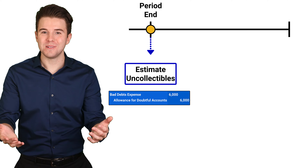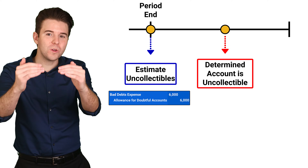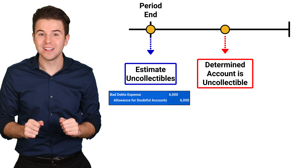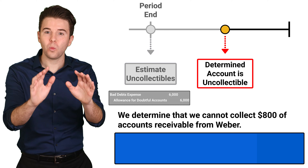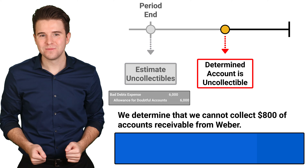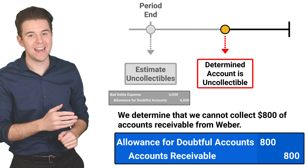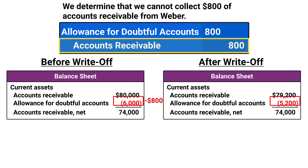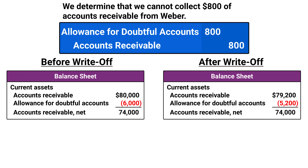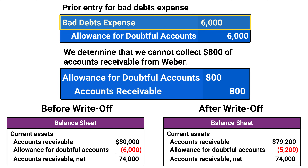We can also report this on the balance sheet as accounts receivable net of doubtful accounts as 74,000. That's how we record our estimate of uncollectables. Now, what happens when we actually determine an account is uncollectable? Using the allowance method, we reduce the allowance for doubtful accounts and accounts receivable. For example, let's say we determine that our customer Webber's 800 account is uncollectable. To record this, we debit allowance for doubtful accounts for 800 and credit accounts receivable for 800. The debit to allowance for doubtful accounts reduces that account, and the credit to accounts receivable removes 800 from that account. You'll notice we don't record any expense when we determine the account is uncollectable, because under the allowance method, we already recorded that expense when we estimated it at year-end.